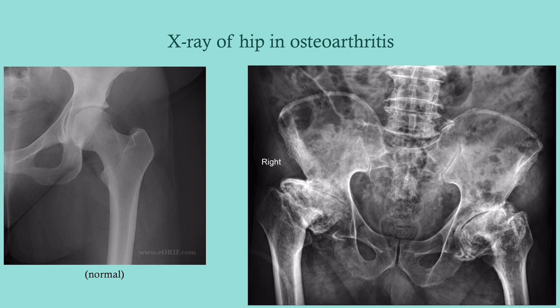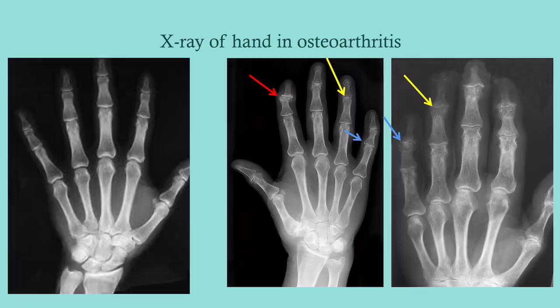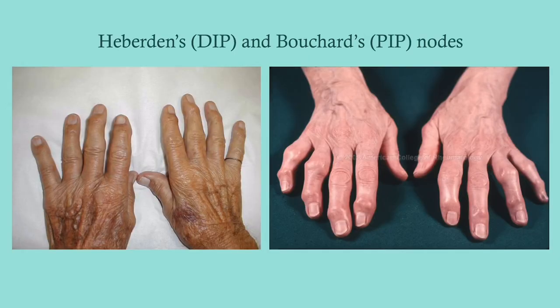Here you can see a more mild example with loss of joint space, and then a case with involvement on both sides. Here's a normal hand X-ray, and this is what we would see in osteoarthritis: loss of joint space and these Heberden's and Bouchard's nodes — bony nodes, different from rheumatoid nodules which feel like a firm cyst. Heberden's nodes refer to the distal interphalangeal joints, and Bouchard's nodes refer to the proximal interphalangeal joints.